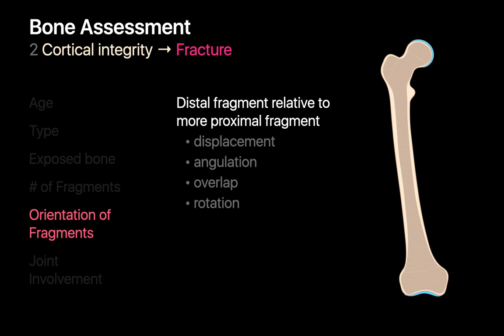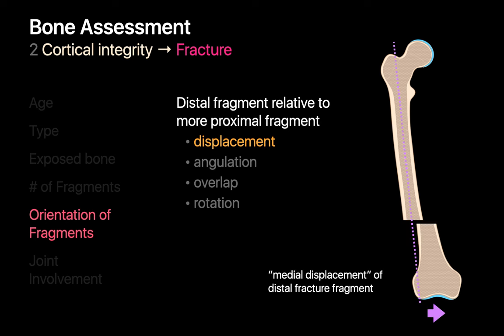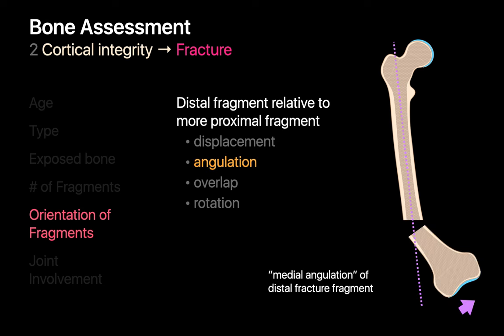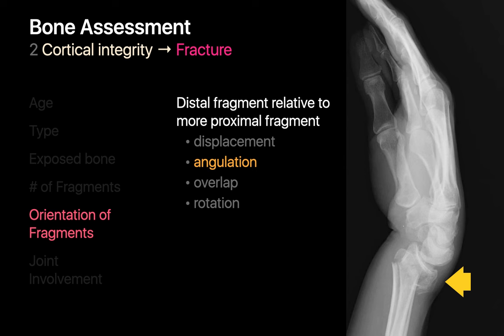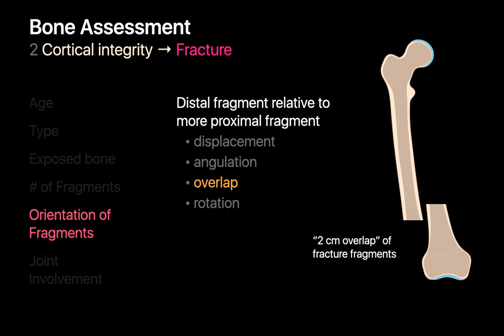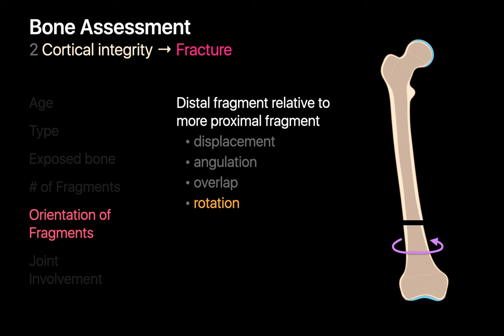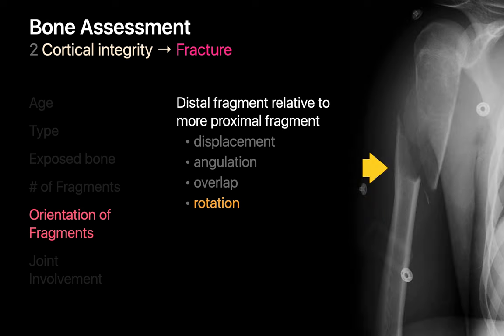Describe the location of the distal fracture fragment relative to the proximal fracture fragment. If the distal fracture fragment is displaced, describe the direction and amount of displacement. If the distal fracture fragment is angulated relative to the proximal fragment, describe the direction the distal end of the distal fracture fragment is angled towards. Describe if the distal fracture fragment overlaps the proximal fragment and if so, describe the amount. Describe if the distal fracture fragment appears to have rotated relative to the proximal fragment, like in this oblique proximal right humeral fracture.